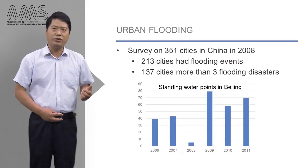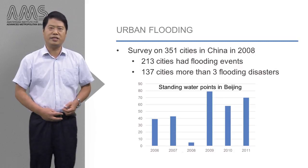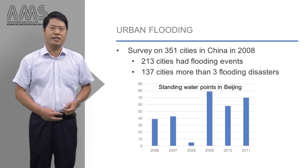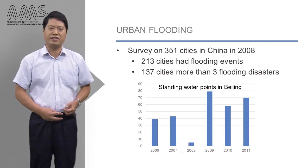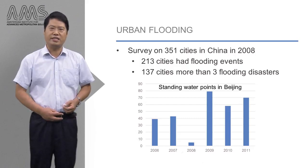This is also seen in Chinese cities. In 2008, a survey in 351 cities was conducted which showed that 213 cities have more and more extreme flooding events. This is about 60% of the surveyed cities. Among them, 40% of the cities have more than three flood disasters per year. In Beijing, for example, there are about 50 local standing water points per year. You can imagine that it poses a challenge for daily life.